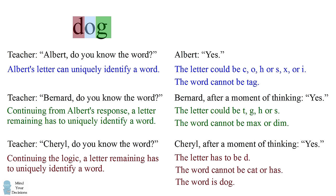Albert would have gotten the letter O. Bernard would have gotten the letter G. And Cheryl would have gotten the letter D.